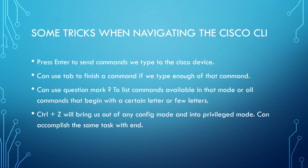Let's have a look at some tricks and hints for navigating the Cisco CLI more easily. We press the Enter or Return key to send commands to the Cisco device. We can also use the Tab key to finish commands if we've typed enough — for example, typing C-O-N-F and pressing Tab will complete the word configure for the configure terminal command. We can use the question mark to list all commands available in any mode. We can also type a partial command like SH followed by a question mark to see all commands beginning with those letters and their descriptions. And of course, Control-Z or the end command brings us out of any configuration mode and back into privilege mode.